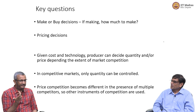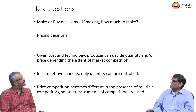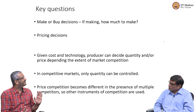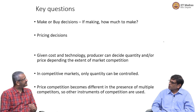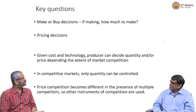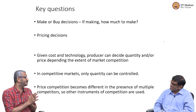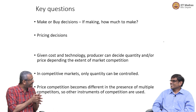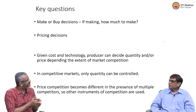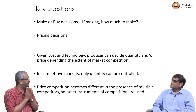In a perfectly competitive market, you have no control over price. For example, OPEC sets prices — there is no control over price. Only quantity you can decide: how much you are going to produce. But OPEC is a cartel, so you have to go by the cartel and you cannot deviate from that — it is a very different kind of model.